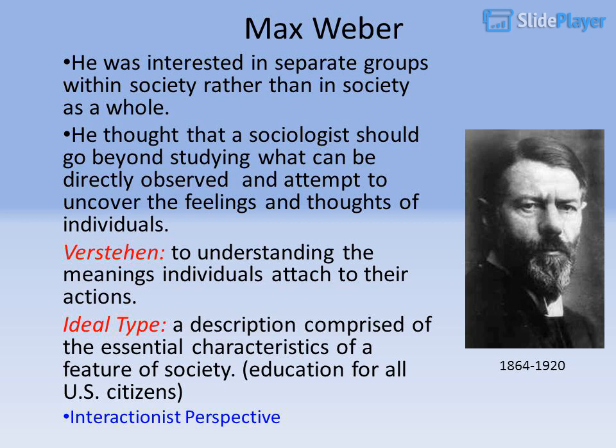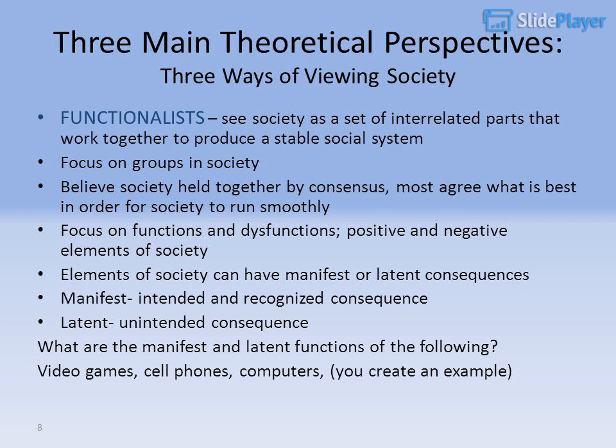Three Main Theoretical Perspectives: Three Ways of Viewing Society. Functionalists see society as a set of interrelated parts that work together to produce a stable social system. They focus on groups in society and believe society is held together by consensus — most agree on what is best in order for society to run smoothly. They focus on functions and dysfunctions, the positive and negative elements of society. Elements of society can have manifest or latent consequences. Manifest: intended and recognized consequence. Latent: unintended consequence. What are the manifest and latent functions of video games, cell phones, and computers?